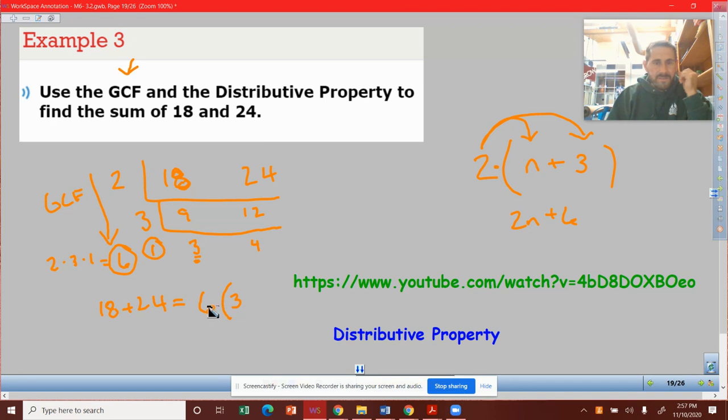So plus 4. 6 times 4 would give me 24. So if I did the distributive property, 6 times 3 would give me that 18, then 6 times 4 would give me that plus 24. And you can see how this expression is the same as this expression. So we've used our GCF and we used the distributive property.